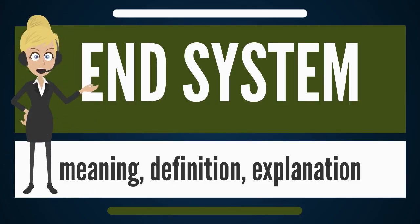In networking jargon, the computers that are connected to a computer network are sometimes referred to as end-systems. They are labeled end-systems because they sit at the edge of the network. The end user always interacts with the end-systems. End-systems are the devices that provide information or services.